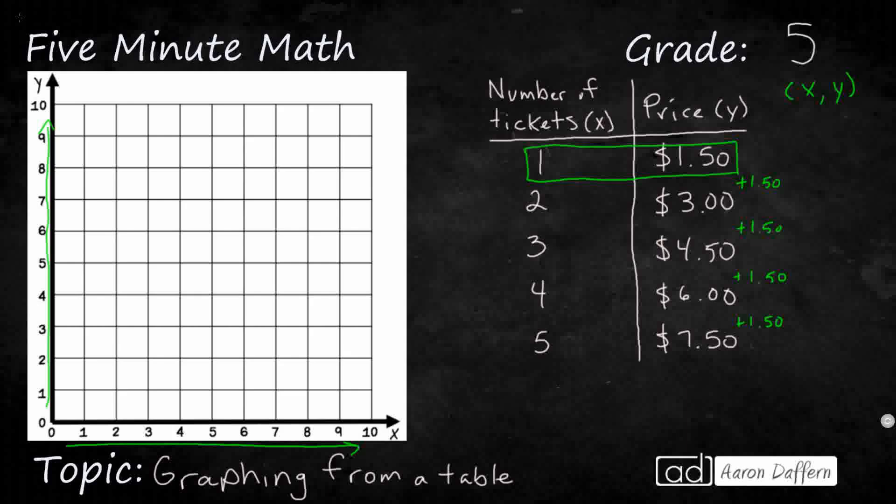These are our two values. Typically when you see different tables like this, they will go ahead and give you - if you look in there, you notice there's already a little x, there's already a little y. Sometimes they'll be in parentheses, sometimes they'll just be italicized.